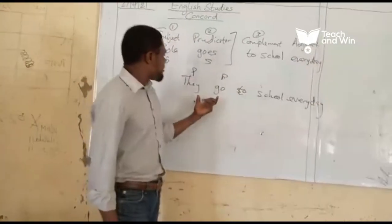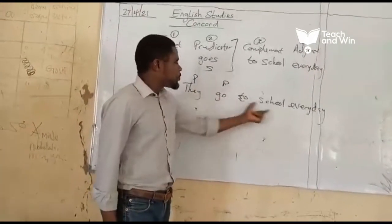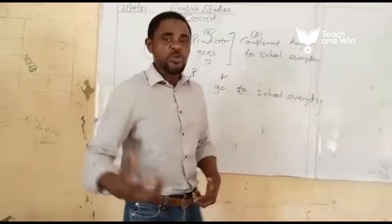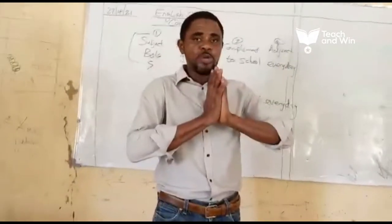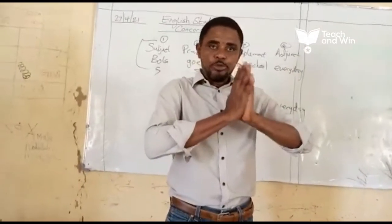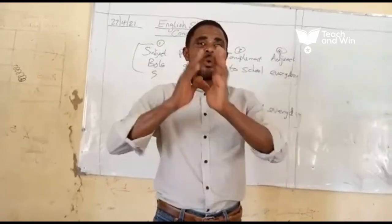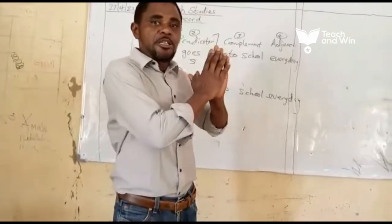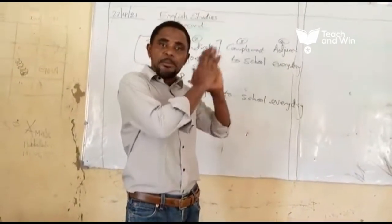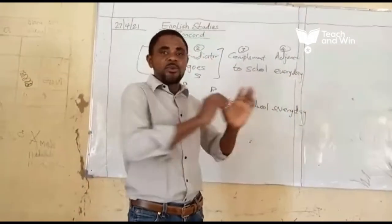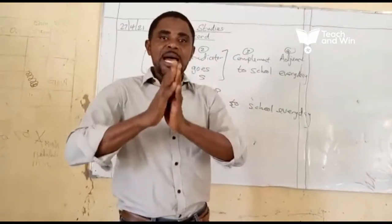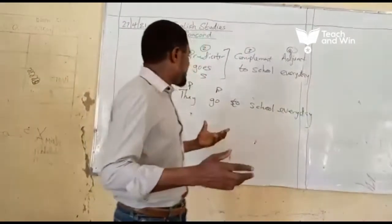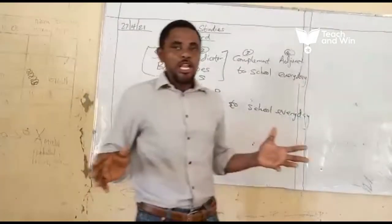Another example is: they go to school every day. They is a plural pronoun as subject, while go is equally a plural predicator. You can see — that's all about it.